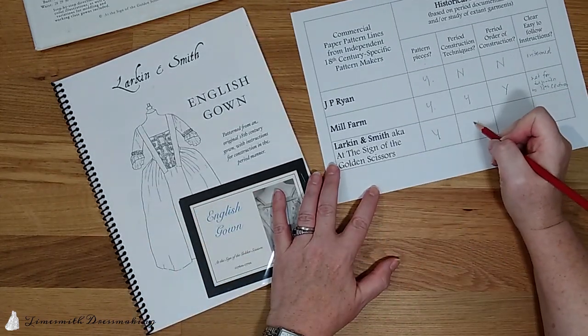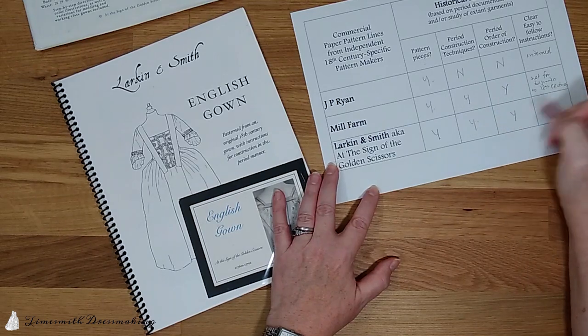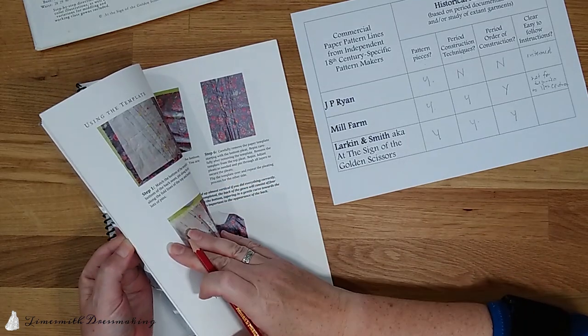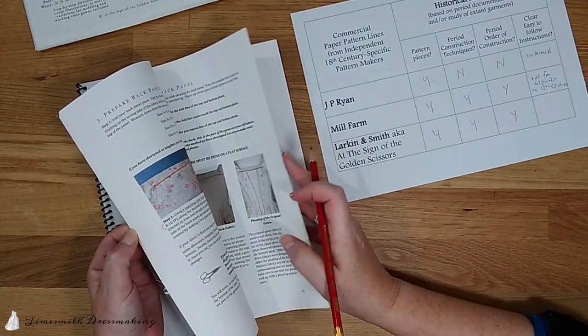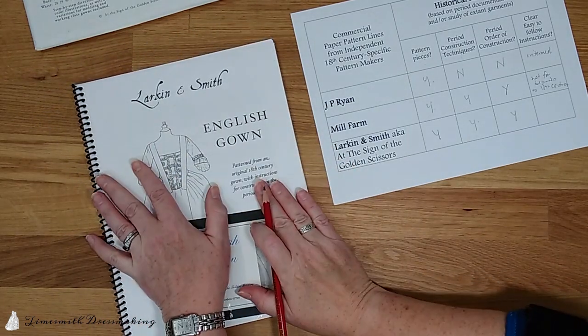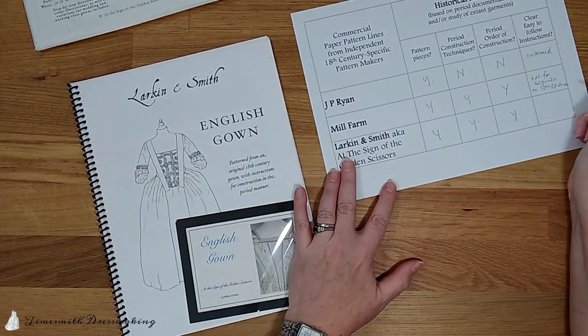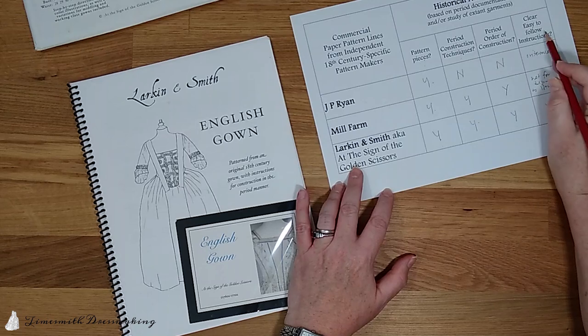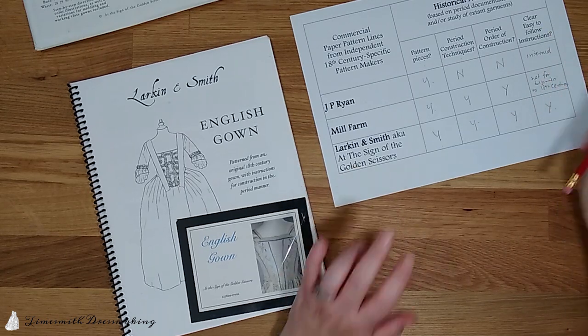So Larkin and Smith, we have period construction techniques, order of construction. Also, it assumes no prior knowledge. You can be an absolute beginner and it will hold your hand, walk you through exactly what to do. So I rate it very highly for clear and easy to follow instructions.